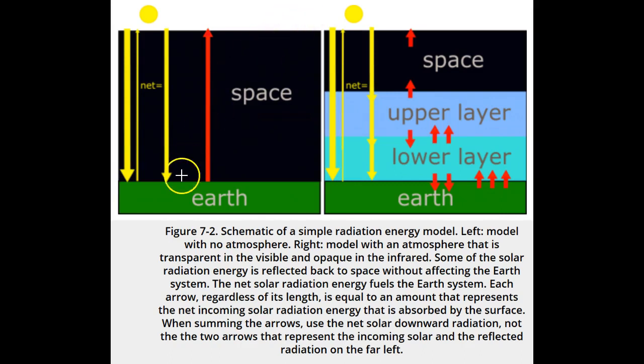Net solar radiation energy, which is just the difference between the incoming solar radiation energy and the reflected solar radiation energy, equals Earth's infrared radiation energy outgoing to space.